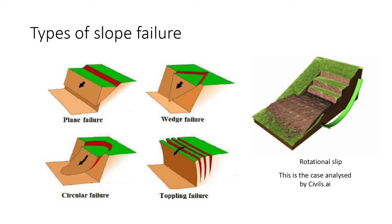Wedge failure occurs when two discontinuities intersect, whose lines of intersection are approximately perpendicular to the strike of the slope and dip towards the plane of the slope.